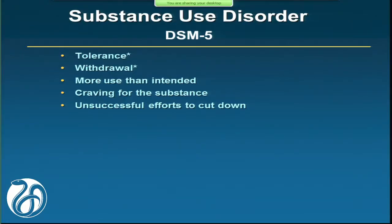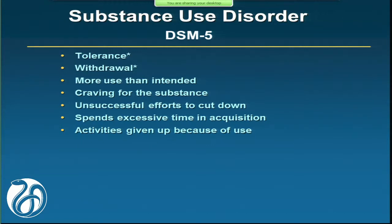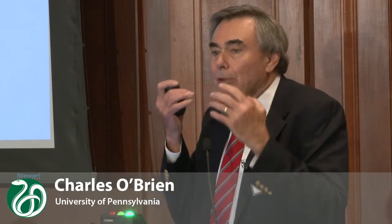Addiction is drug-seeking behavior. The only symptom we changed was eliminating legal problems because it wasn't useful, and we added craving. Craving is perhaps the only psychiatric symptom for which we have a neurophysiological basis, because it shows up with classical conditioning. Your brain responds to cues associated with your drug of choice. We can show that when a former alcoholic or cocaine addict is shown cues, their brain lights up — there's blood supply to specific brain areas, dopamine is released — and this happens before they ever get the drug, creating all kinds of anticipation.